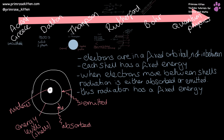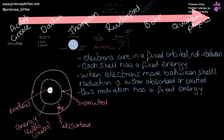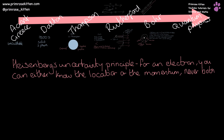One of the problems with this model, or drawing it in this way, is that actual atoms are 3D and not 2D. This leads us toward Heisenberg's uncertainty principle, which states that for an electron, you can either know the location or the momentum, but never both. In reality, this means we can only ever calculate the probability of where an electron is located. The majority of the time, electrons stay within a defined area, and this area is a sphere — not a 2D circle.